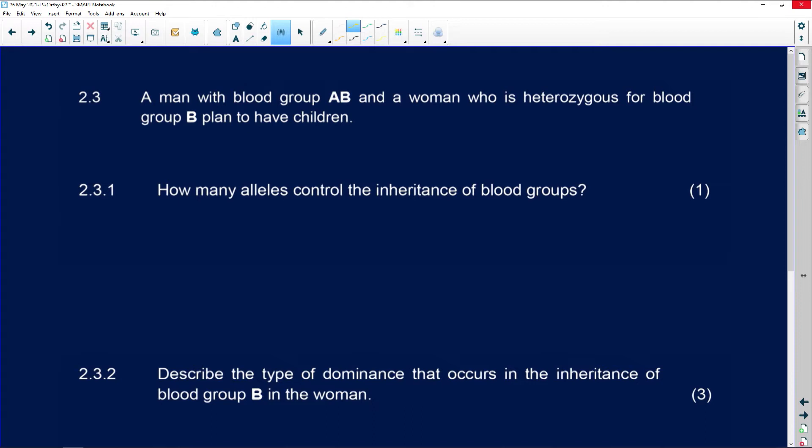Let's go. Alright, we have a man with blood group AB and a woman who is heterozygous for blood group B, which means she is going to have the alleles that look like that. She's heterozygous for blood group B, and this chap whose blood group AB is going to have an allele A and an allele B.